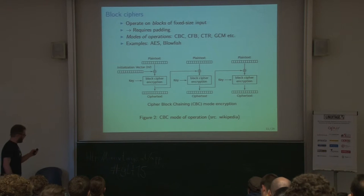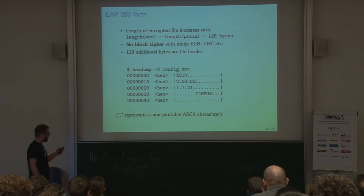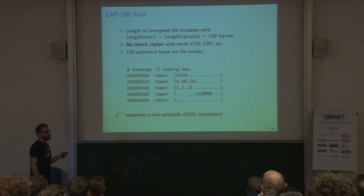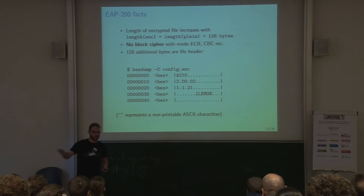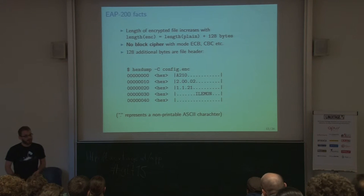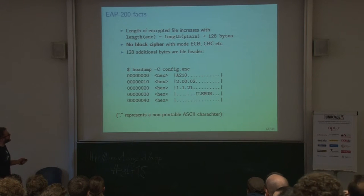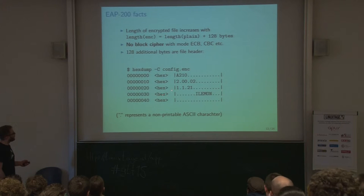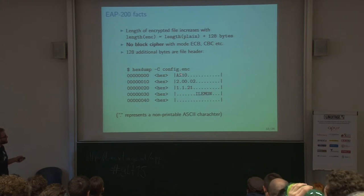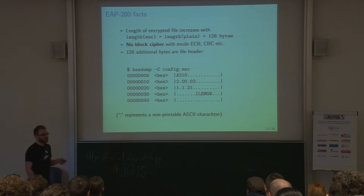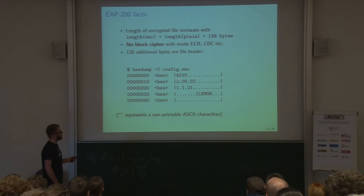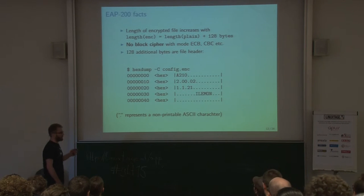So going back to our access point — since the output grows by arbitrary byte counts, not a fixed block size, it can't be a block cipher. You can throw away a lot of the standard algorithms that are good and really hard to break. The 128 bytes at the beginning, if you look at them in a hex editor, look like a file header storing information: the device model, firmware version numbers, and a random identifier.